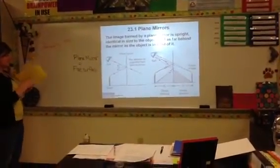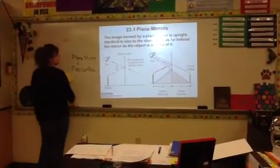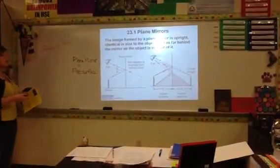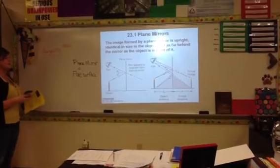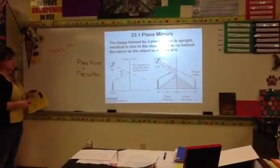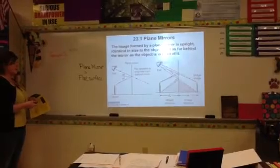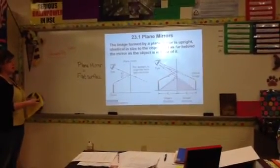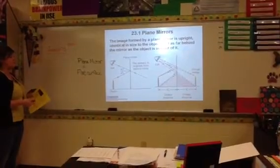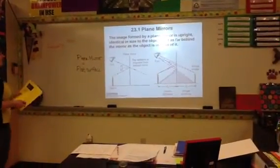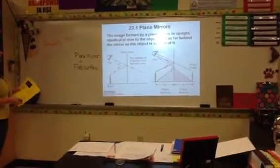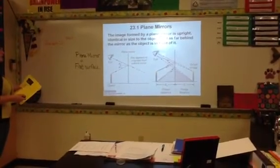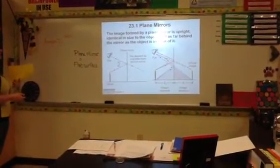Typically the images that are formed by plain mirrors are upright. They are identical in size to the object of whatever it is that's reflecting off of the mirror. And then they are as far behind the mirror as the object is in front of it. So let's look at this picture. I have an object specifically here. We have a candle. We're looking at the light that's emanating from the flame.